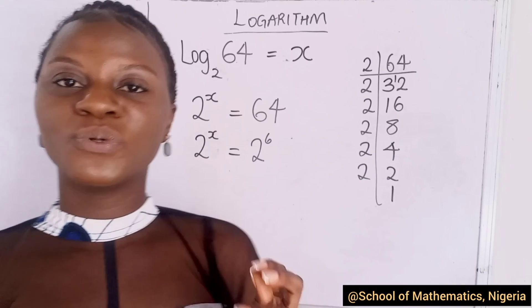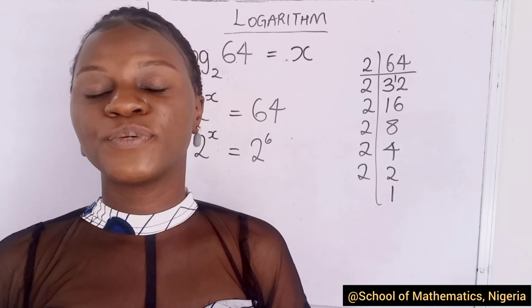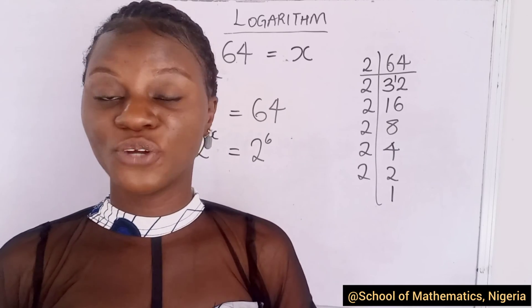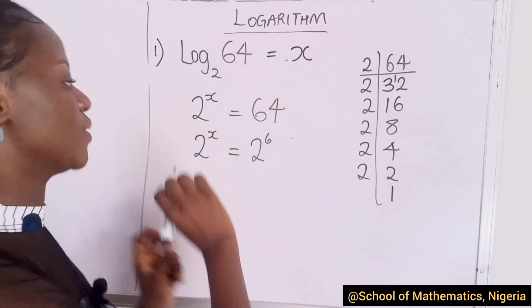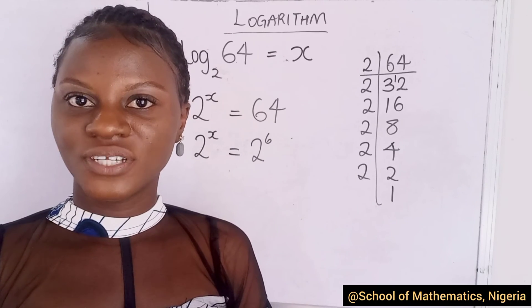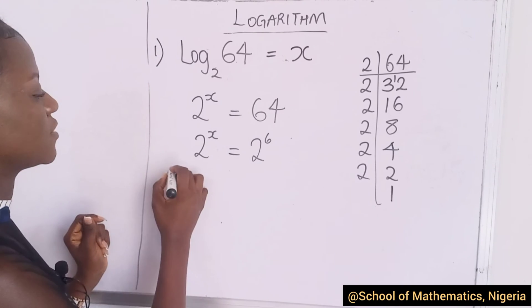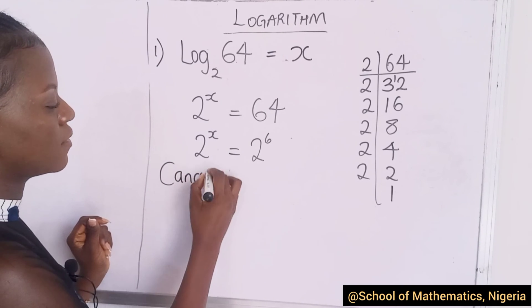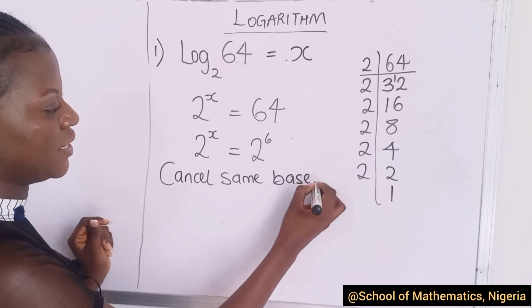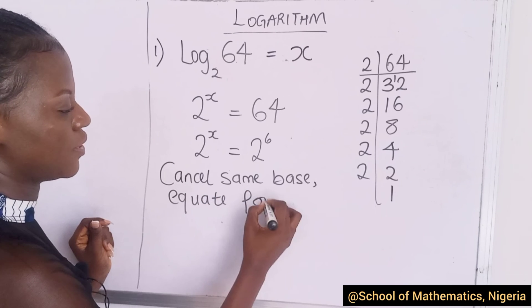Now, remember, I was saying equate the base in my previous examples, but it's actually cancel the base and equate the power. I don't know how I made such mistakes, but thank you to as many of you that brought it to my notice. Thank you very much. I do not take it for granted. So, you have to cancel same base, then equate power.